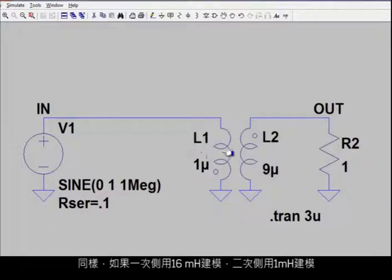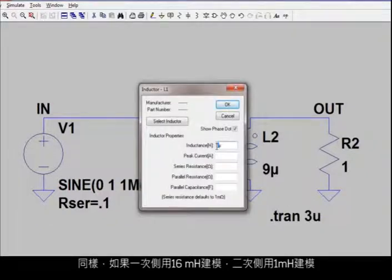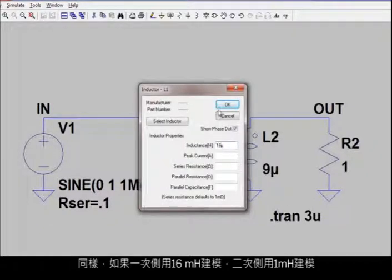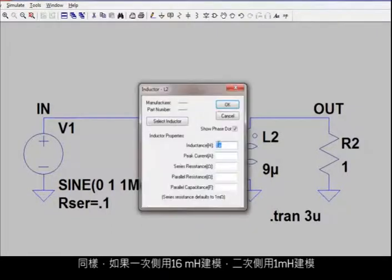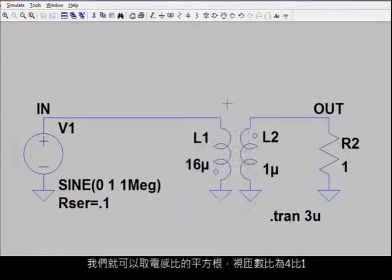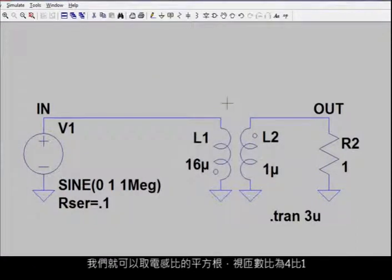Likewise, if the primary is modeled with say 16 microhenrys, and the secondary is modeled with 1 microhenry, we can now view that as a 4 to 1 turns ratio by taking the square root of the inductance ratio.